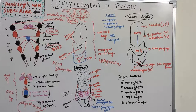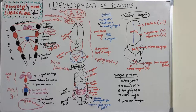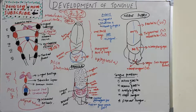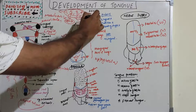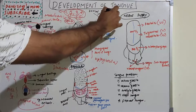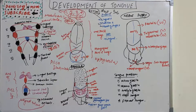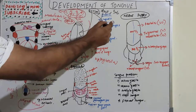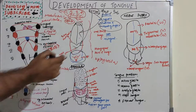The main artery supplying the tongue is the lingual artery, which is a branch of the external carotid artery. It reaches the tongue after passing deep to the hyoglossus muscle and divides into the dorsal lingual artery, the deep lingual artery, and the sublingual artery. The dorsal lingual artery supplies the posterior part, the deep lingual artery supplies the anterior part, and the sublingual artery supplies the submandibular gland and floor of the mouth. The tonsillar artery and ascending pharyngeal artery supply the most posterior part of the tongue.